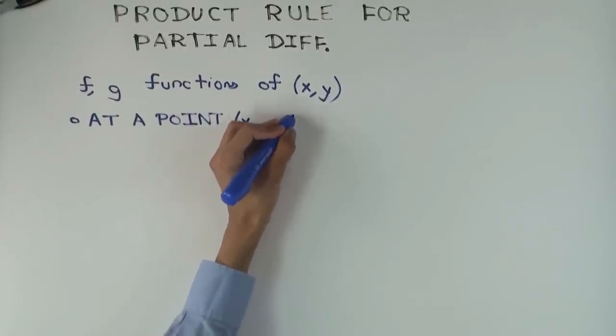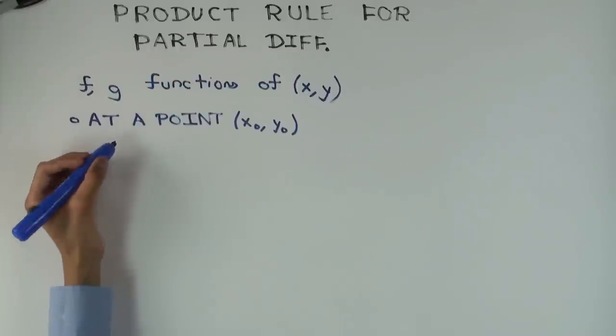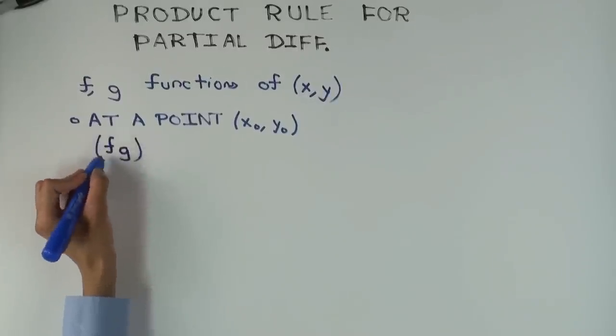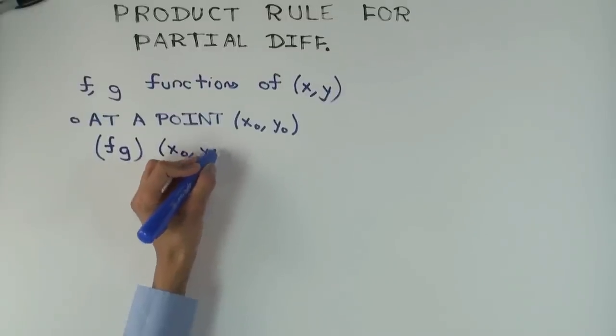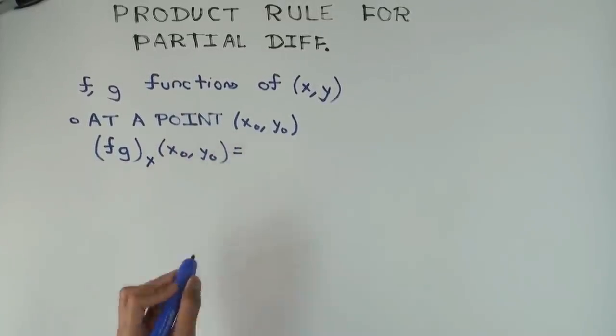So what should the statement be? Well, the statement would be basically that there's going to be two statements, one is for the partial derivative with respect to x, and one is going to be the partial derivative with respect to y. So here's the product function, f times g, at x naught y naught, and I'm taking the partial derivative with respect to x at x naught y naught.